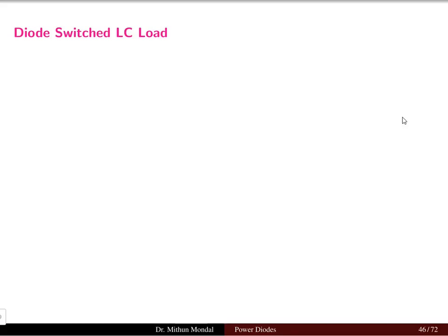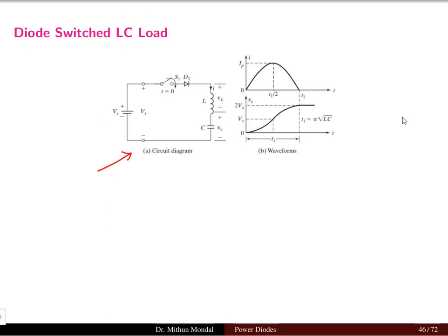Welcome back. We were discussing power diodes in power electronics. In the previous two lectures we covered the diode switched RL load and the diode switched RC load. In this topic we will cover the LC load along with the diode, where L stands for inductor and C stands for capacitor. A circuit is shown where diode D1 is connected and the load consists of one inductor and one capacitor.